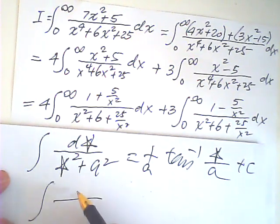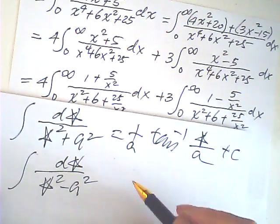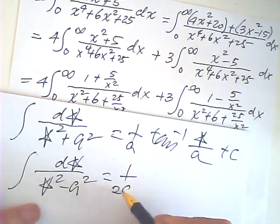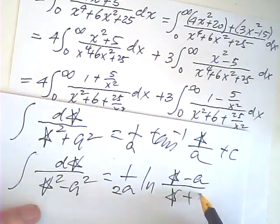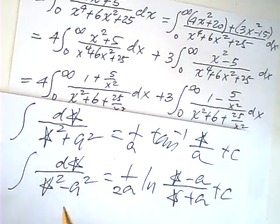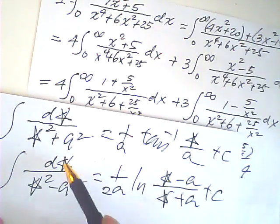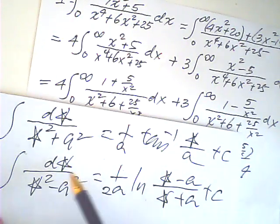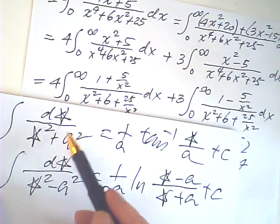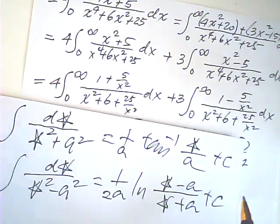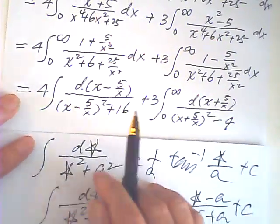There's another one, which is d star over star squared minus a squared. That one is equal to 1 over 2a, natural log star minus a over star plus a. I believe that you know these two formulas, or can easily derive by yourself. This is partial fractions. This one is using substitution.